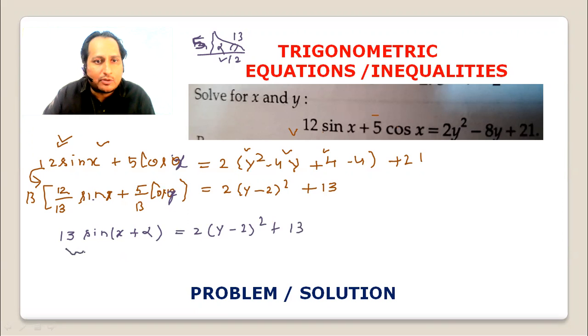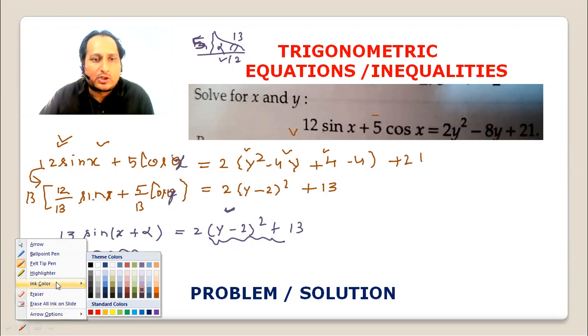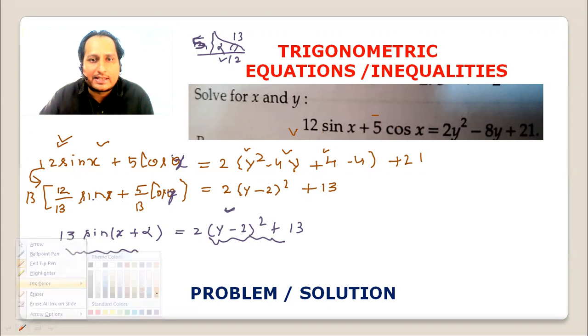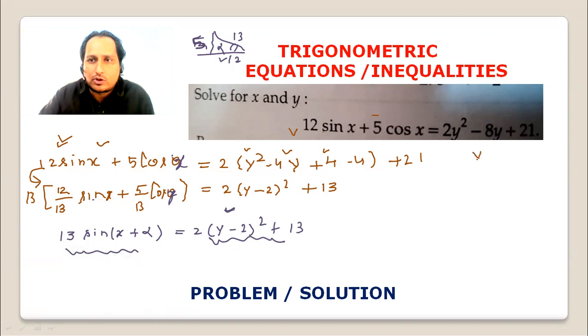For the whole square the minimum value is 0. So y equals 2 is possible.